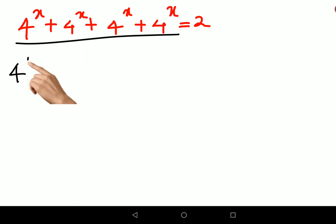So what we will do is take 4 raised to x commonly. We will be left with 1 plus 1 plus 1 plus 1 equals to 2. So this then comes out to be 4 raised to x into 4 equals to 2.